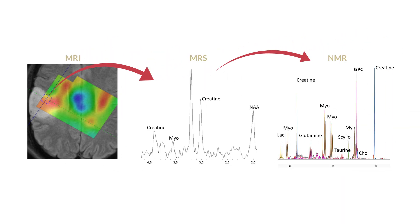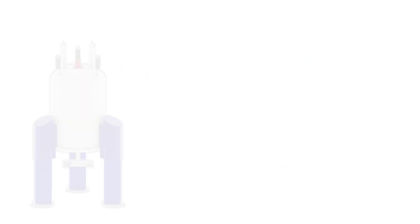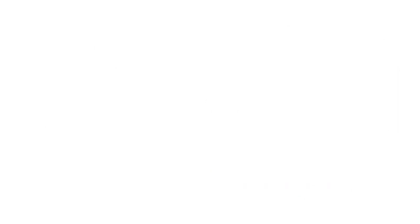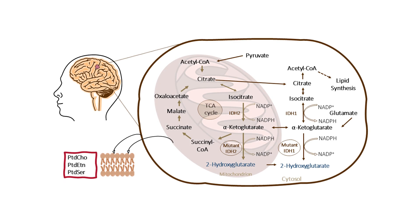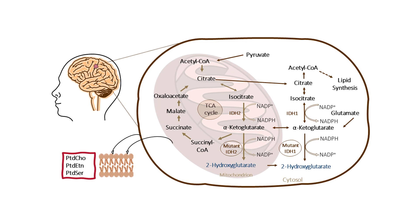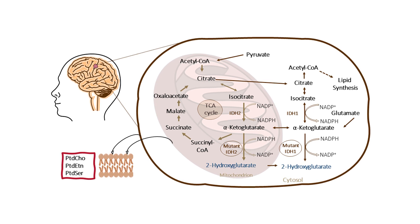By using ex vivo tissue biopsies for NMR-based metabolomics, we can learn much more about tumor metabolism and hereby decipher tumor heterogeneity. By that, we can identify more than 50 metabolites with quantitative values and put these metabolites into pathway analysis to understand which metabolites are associated with the IDH1 mutation or with oxidative stress. From that we can learn novel therapeutic approaches and treatment targets.